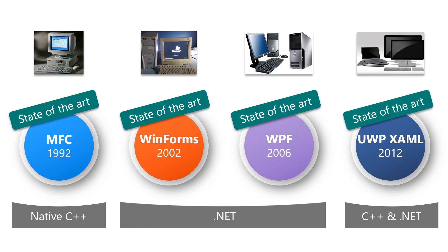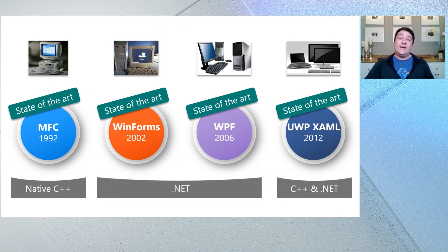The UWP XAML framework is Microsoft's most advanced state-of-the-art framework for building Windows development today. It brings new capabilities, is built on our latest graphical engine, embodies our Fluent Design System, and is designed to meet the expanding ecosystem of devices spanning desktops, laptops, tablets, two-in-ones, consoles, and even the HoloLens. Importantly, UWP XAML can be used in both C++ and .NET.